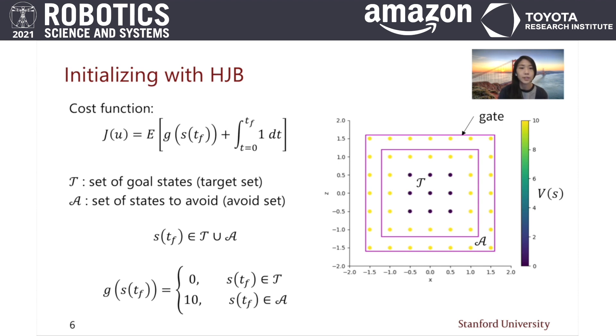Assigning larger values at the gate frame indicates a larger cost at those terminal states. Additionally, we penalize the amount of time taken to reach the terminal states.